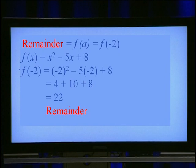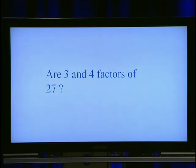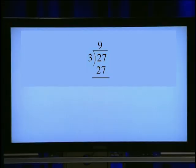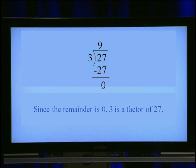I hope you understood how to apply the remainder theorem to find the remainder when a polynomial is divided by a linear function. Now let's check whether 3 and 4 are factors of 27. To check 3 as a factor, divide 27 by 3: 3 times 9 is 27, so 27 minus 27 equals 0. Since the remainder is 0, 3 is a factor of 27.